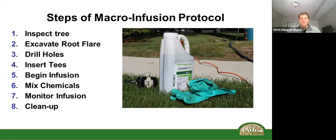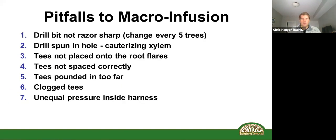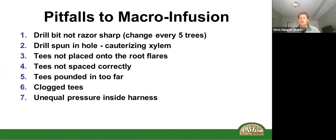These are the eight steps for macroinfusion. They're in the application guide and we'll go through them in depth. Keep in mind the seven most common pitfalls we see: drill bits aren't razor sharp; spinning the drill bit in the hole causing excess heat that can cauterize xylem tissue; tees not placed on root flares or not spaced correctly; tees pushed in too far; tees clogged; and unequal pressure inside the harness.